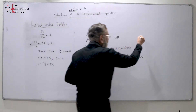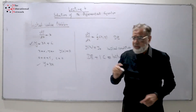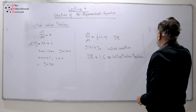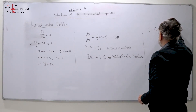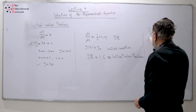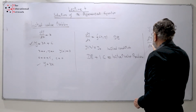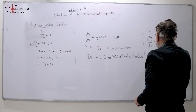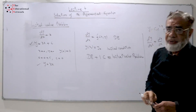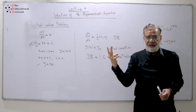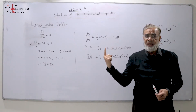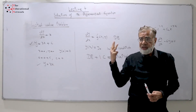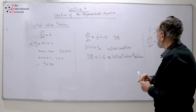Now let's look at another example. We have y = c1·e^(2x) + c2·e^(-3x). When we solve this, we get the differential equation d²y/dx² + dy/dx - 6y = 0. This is a second order differential equation, and because of that we have two arbitrary constants. When there is one arbitrary constant, there is a first order differential equation; two arbitrary constants gives a second order differential equation.